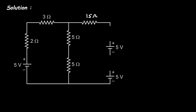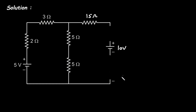Next, we can see that the two 5 volt sources are connected in series, so they combine to simply 10 volts. We remove this voltage source and replace it with the 10 volt equivalent.